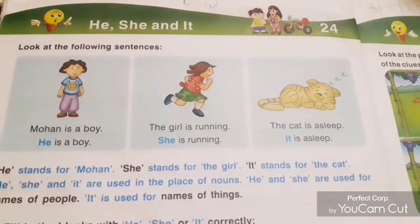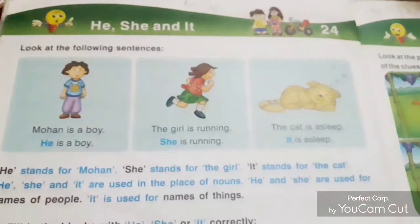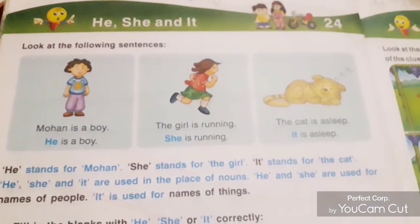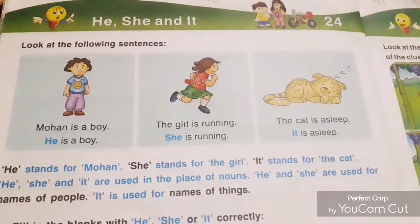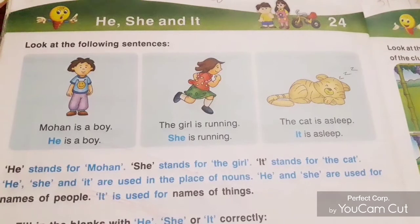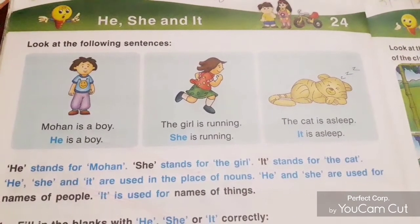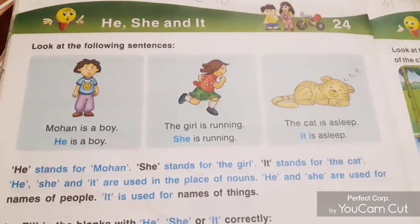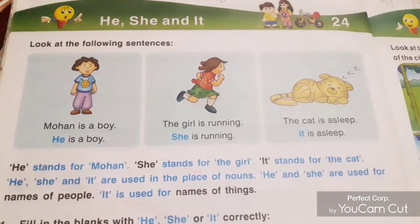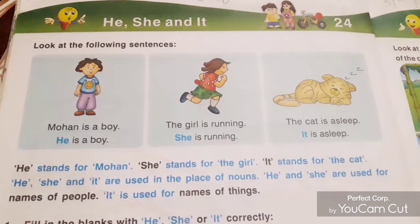In this lesson, we are going to learn about he, she, and it — where we use 'he', where we use 'she', and where we use 'it.' Look at the picture. In the first picture, a picture of a boy is given — Mohan is a boy. For a boy, we always use H-E. Means, for all masculine gender, we use 'he.'